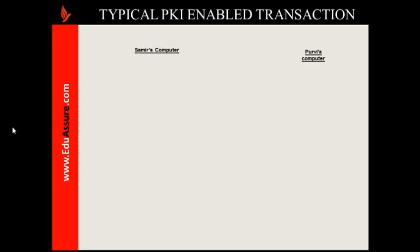We also assume that Samir and Purvi both have a valid digital signature certificate obtained from authorized certifying authorities. This means both of them have a different, unique key pair for themselves. Samir's key pair consists of a public key and a private key. Similarly, Purvi's key pair consists of a public key and a private key, and these key pairs are obtained from the certifying authority during the process of getting the digital signature certificate.